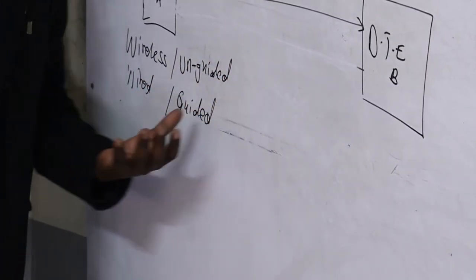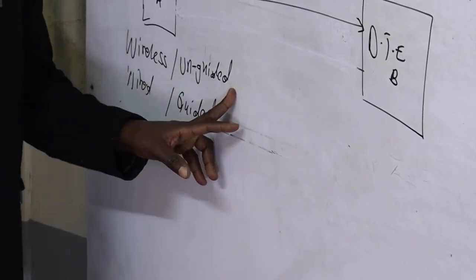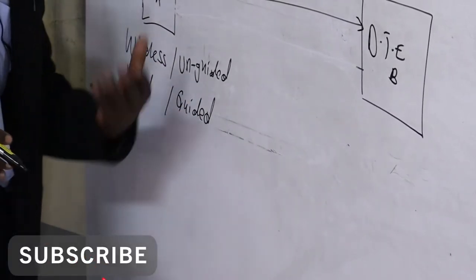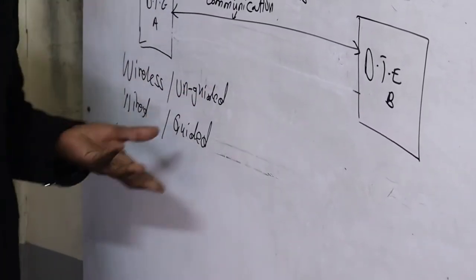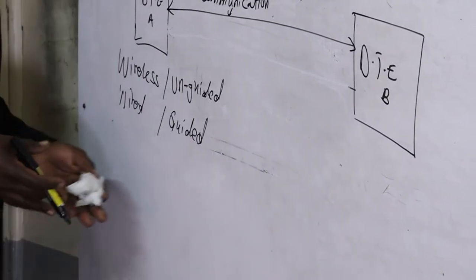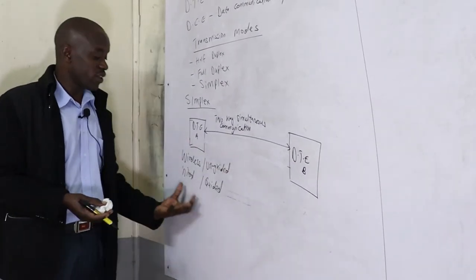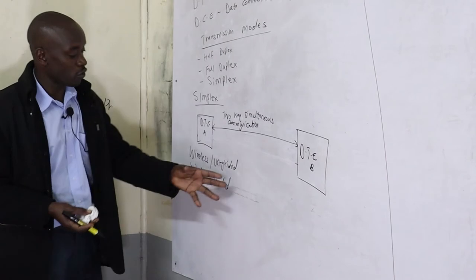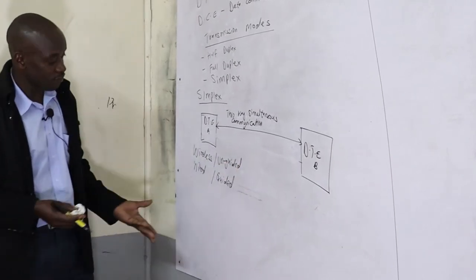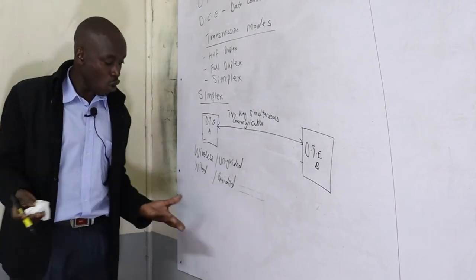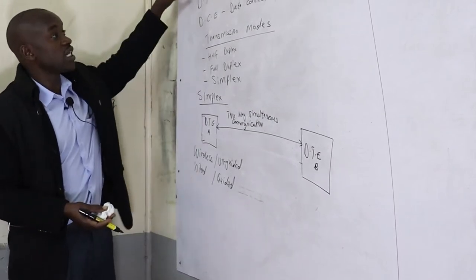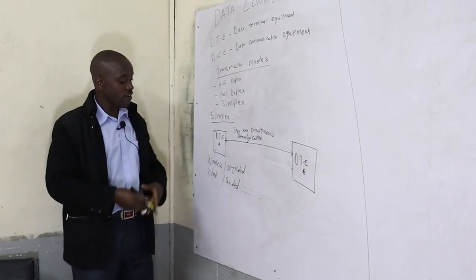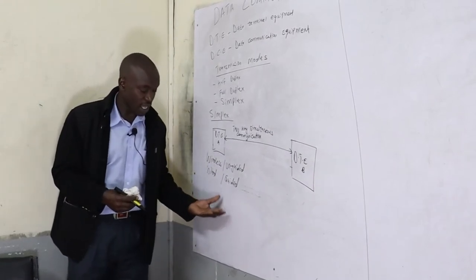We should talk about things like fiber optic cables, satellite, Wi-Fi, WiMAX, Bluetooth, coaxial cable, twisted pair, and local area networks. In wide area networks, we look at technologies like ISDN, X.25 protocol, ATM — asynchronous transfer mode — and frame relay. We also need to understand why we transfer data from analog to digital through modulation, and why we prefer digital signaling over analog.